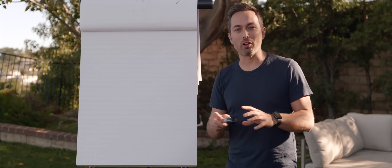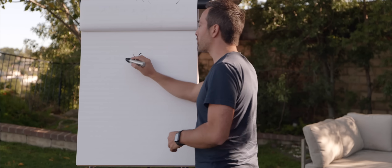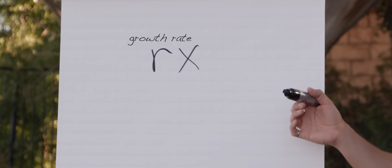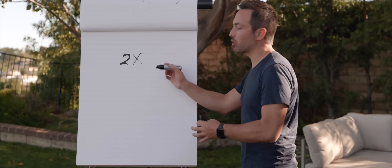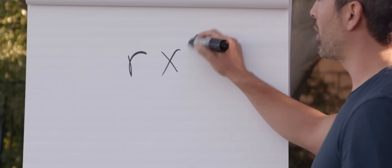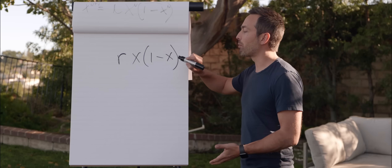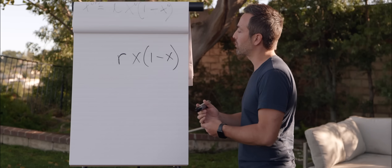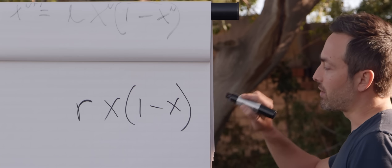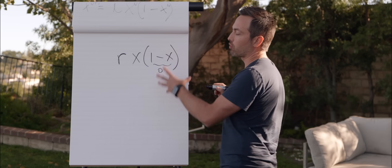Let's say you want to model a population of rabbits. If you have X rabbits this year, how many will you have next year? The simplest model multiplies by some growth rate r — say 2 — meaning the population doubles every year. The problem is that causes exponential growth forever. So we add the term 1 minus X to represent environmental constraints, where X is the population as a percentage of the theoretical maximum, going from 0 to 1. As it approaches that maximum, this term goes to 0 and constrains the population.